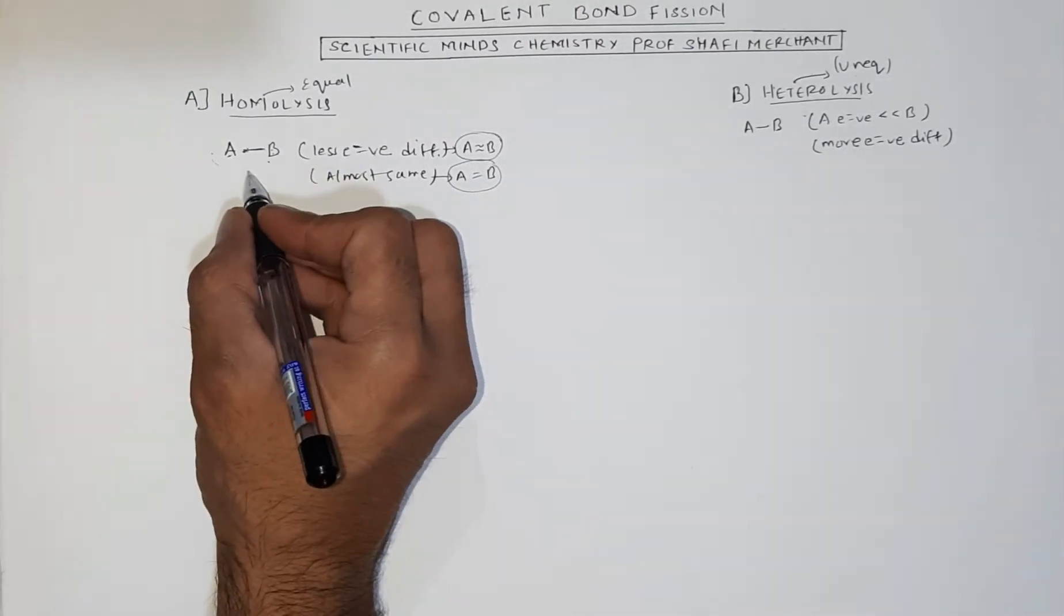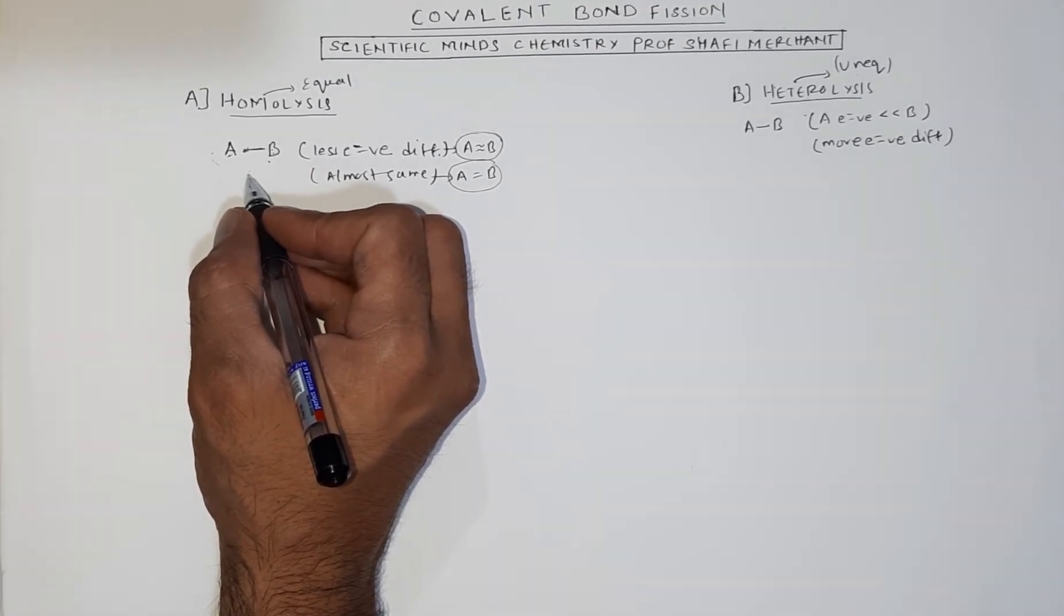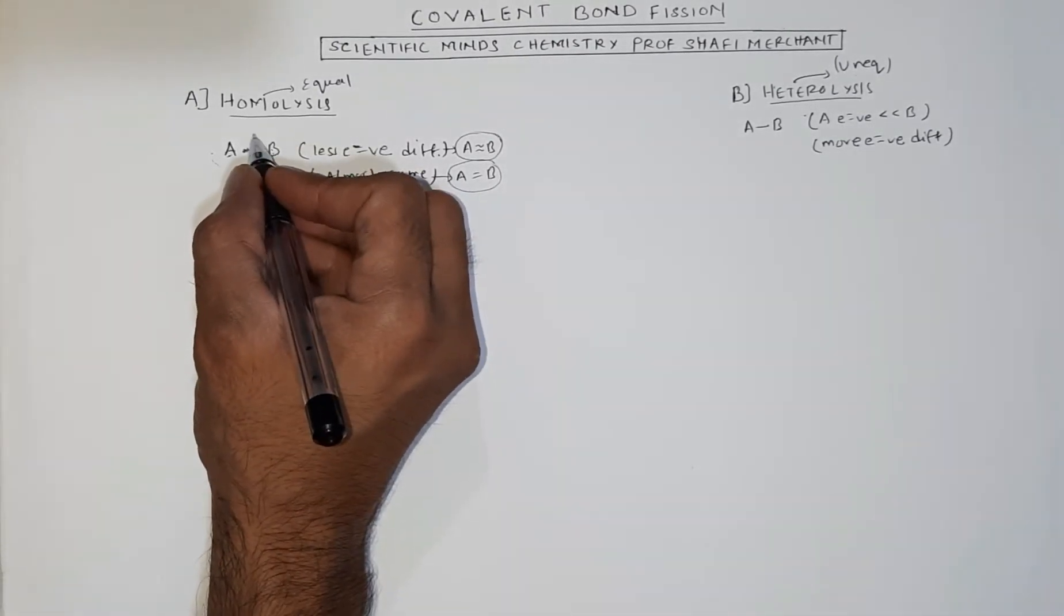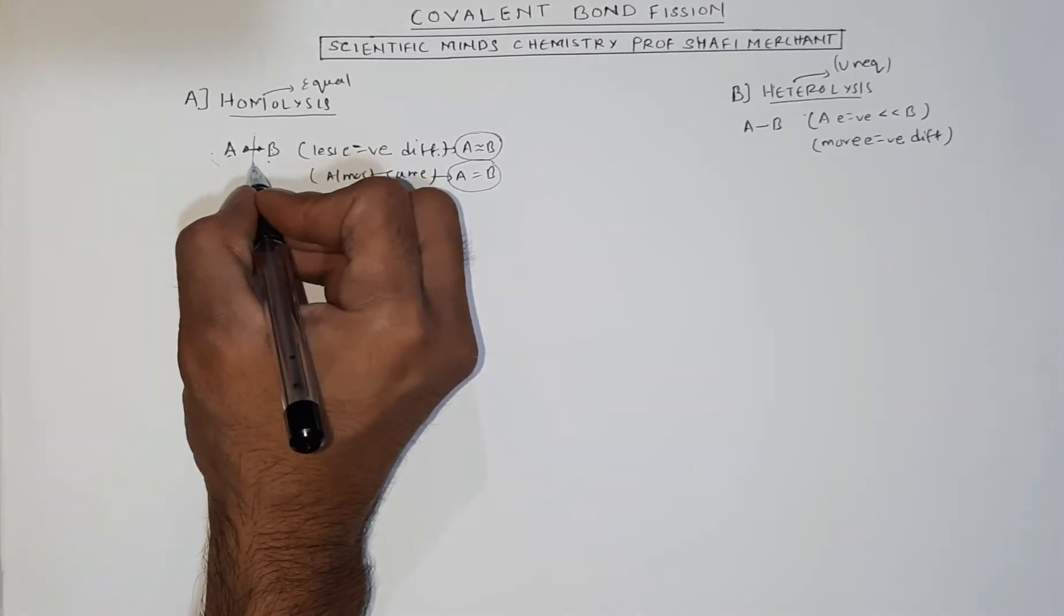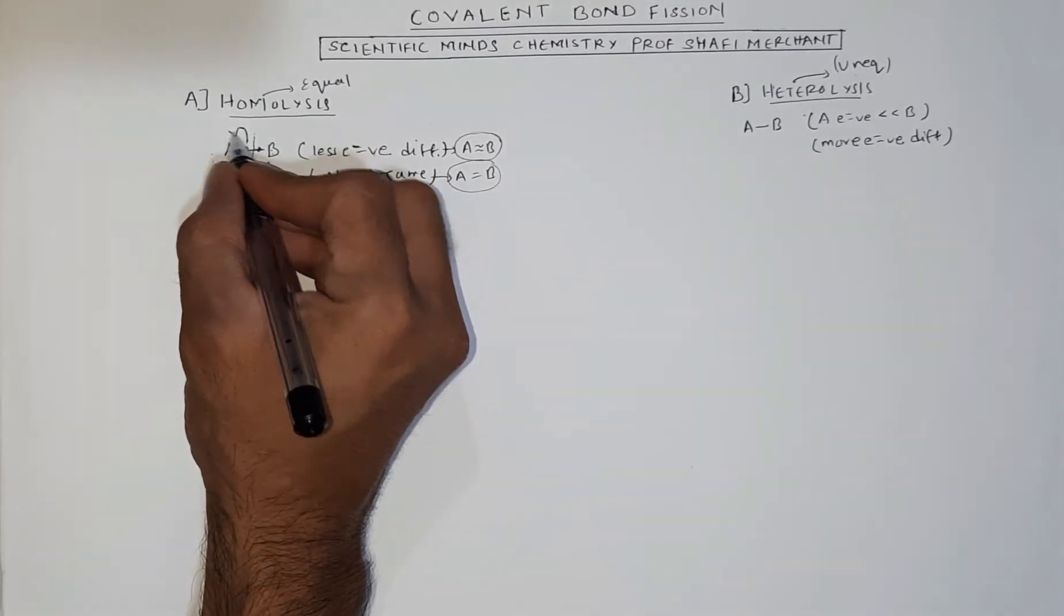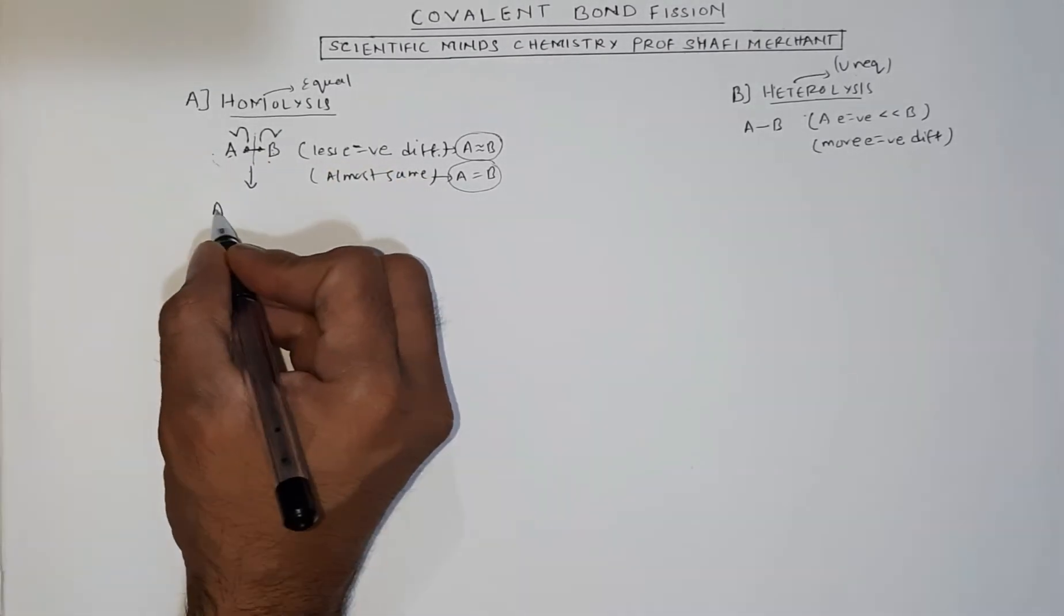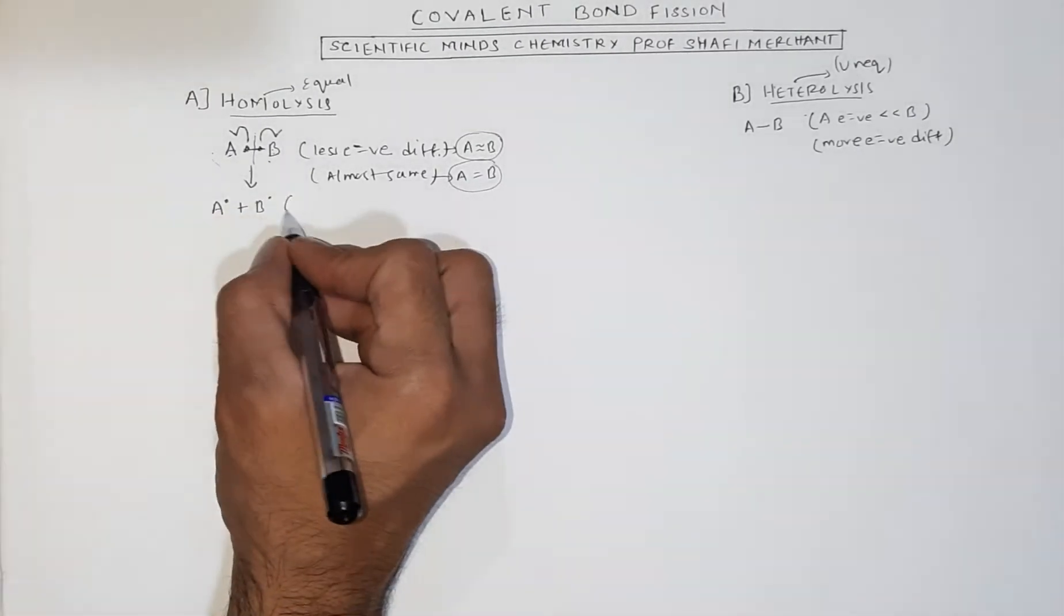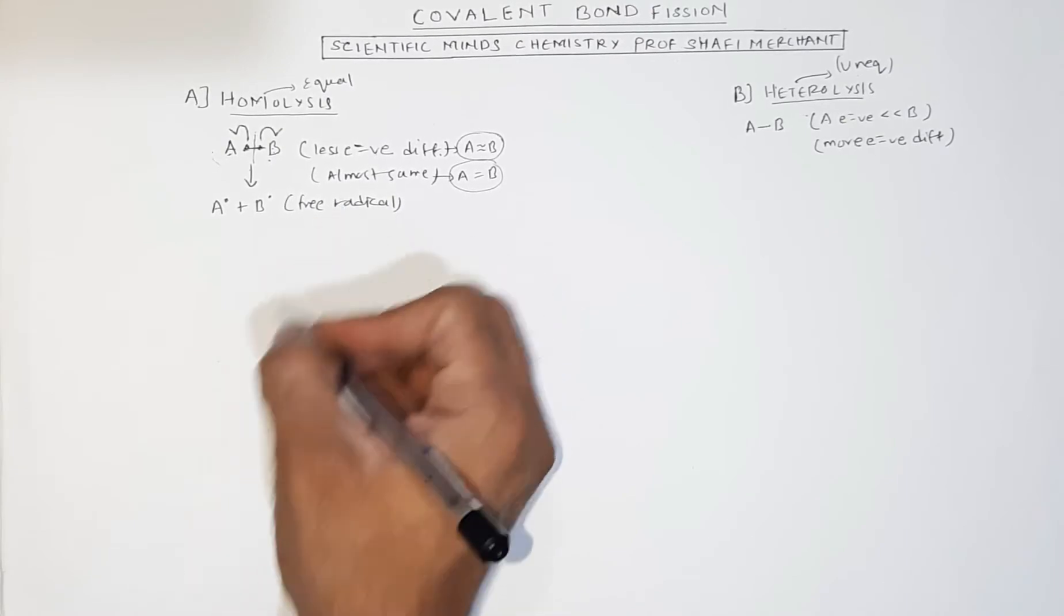Now, with the application of heat or diffused sunlight or in a non-polar media, this bond is broken in an equal manner where one electron goes to A and one electron goes to B. This results in the formation of A with an electron and B with an electron. This species which is formed is called a free radical.